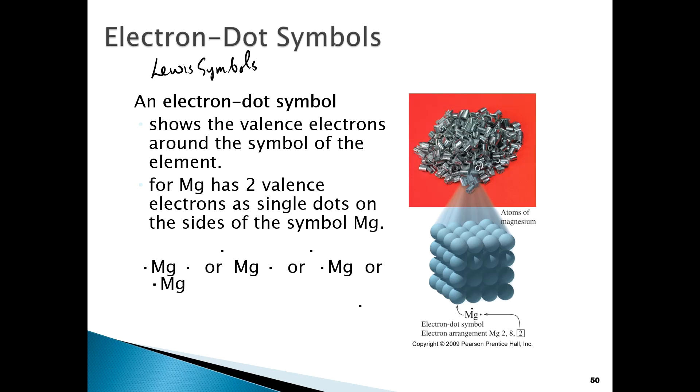Basically, it consists of writing down the formula for the particular atom, such as in the case of magnesium here. Then we use single dots to represent electrons that we place around the symbol. We can put them different ways, as long as you have the two dots surrounding the symbol for the element. That's what Lewis symbols are.